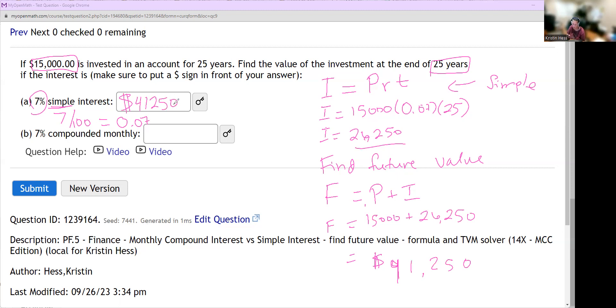And now we're going to set the second one up, which is compounded into our time value of money calculator. I'm going to tell you how to set it up. And then I'm going to have you try it on your own. So it's going to ask for N. N is the number of periods. And this question, it's compounded monthly for 25 years. So your N is going to be 25 years times 12 for months.